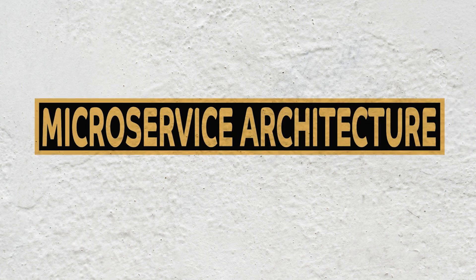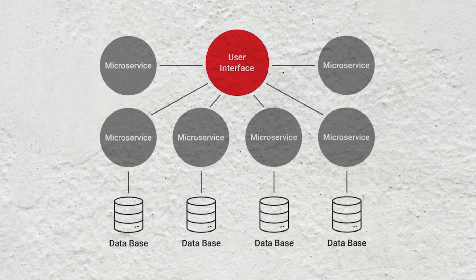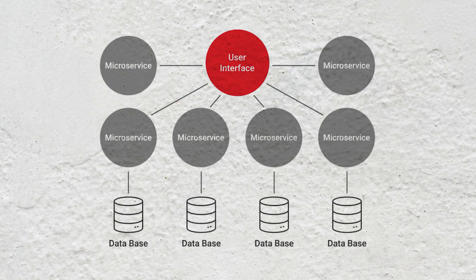Microservices architecture style is one popular way to implement distributed systems, wherein the application is decomposed into multiple microservices, each service responsible for one function. For the end user, it's just one system.